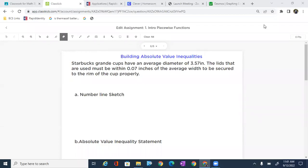Alright, we're going to look at building absolute value inequalities from word problems, and we'll start with a Starbucks problem. It says Starbucks grande cups have an average diameter of 3.57 inches. The lids that are used must be within 0.07 inches of the average width to be secured to the rim of the cup properly.